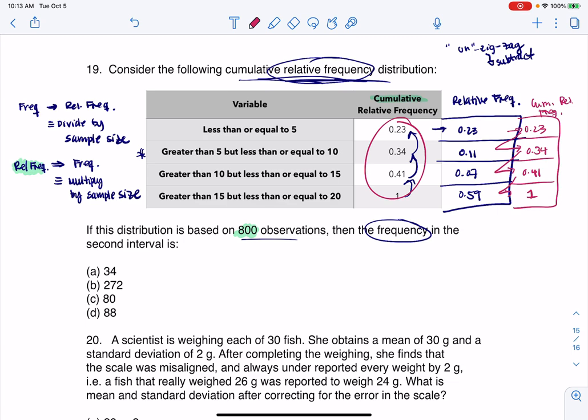So let me go back to my main pen color. If I do 800 times 11%, that's going to leave me with 88 observations. And so that is the frequency of the second interval. All right, thanks so much everyone. Bye.